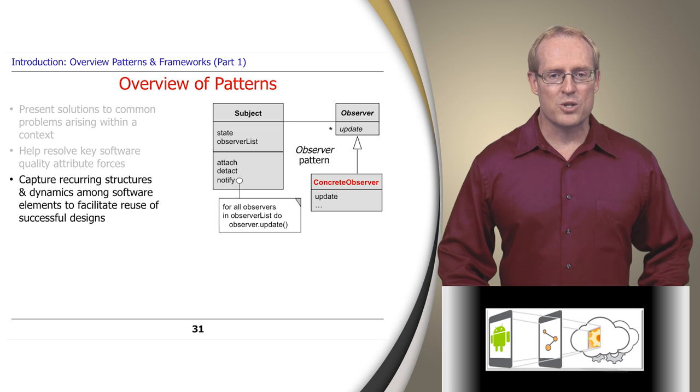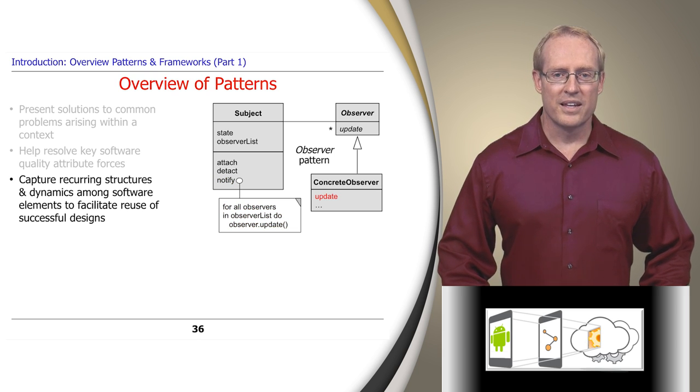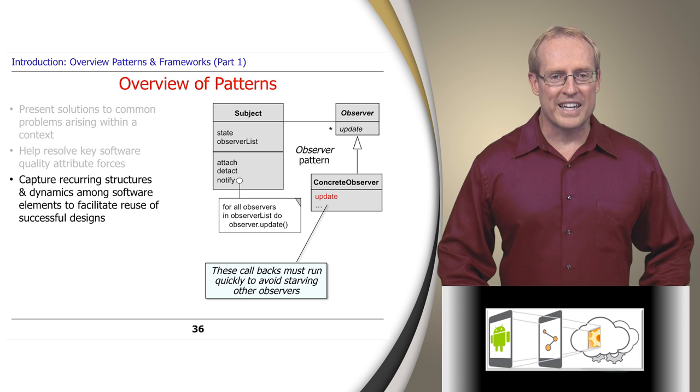These concrete observers override the update method in the AbstractObserver class to define application-specified behaviors. The subject maintains a collection of observers that can be attached or detached by applications. When a state change occurs, the subject is notified, which causes it to iterate through all its attached observers and invoke their update method. These callbacks should run quickly to avoid starving other observers and preventing them from doing their processing.